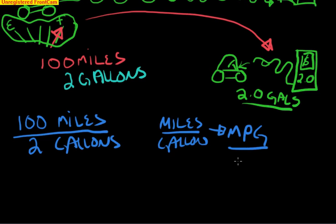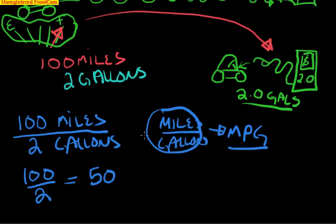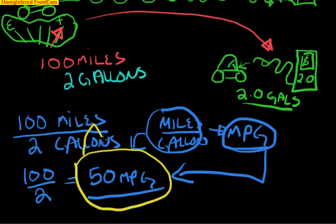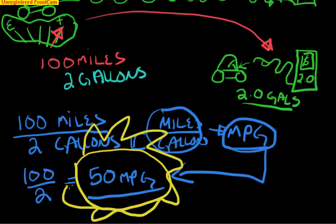So back to our ratio here, we would call it if we went 100 miles and two gallons, mathematically that equals 50, and it equals 50 miles per gallon. And oh, by the way, that's some really good gas mileage.